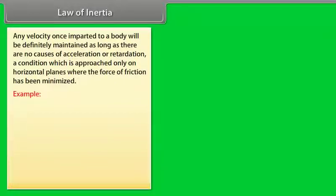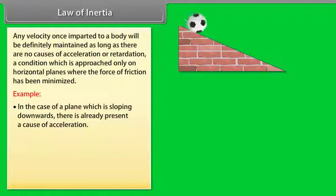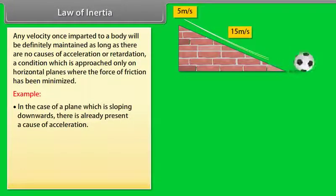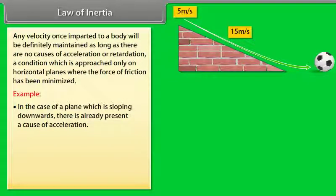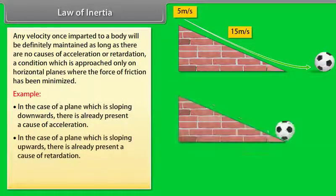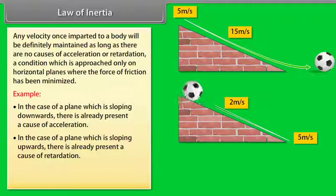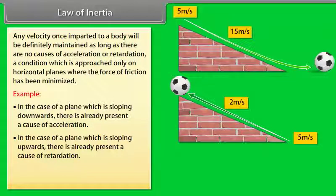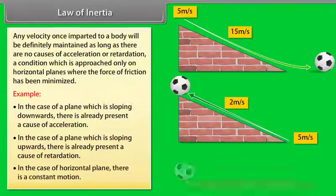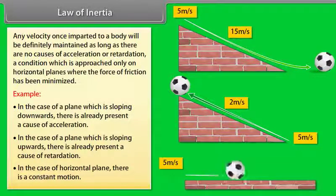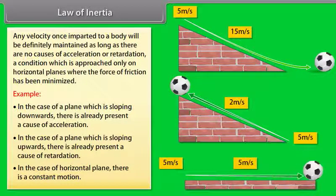For example, in the case of a plane sloping downwards, there is a cause of acceleration. In the case of a plane sloping upwards, there is a cause of retardation. In the case of a horizontal plane, there is constant motion.